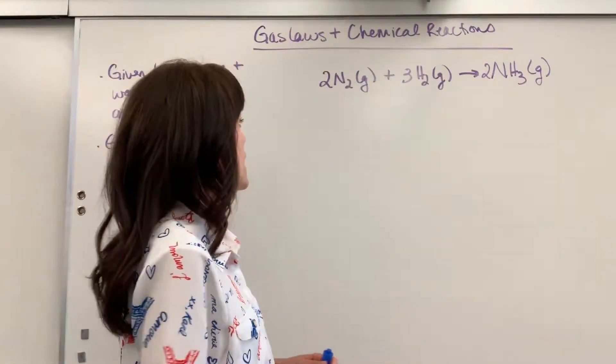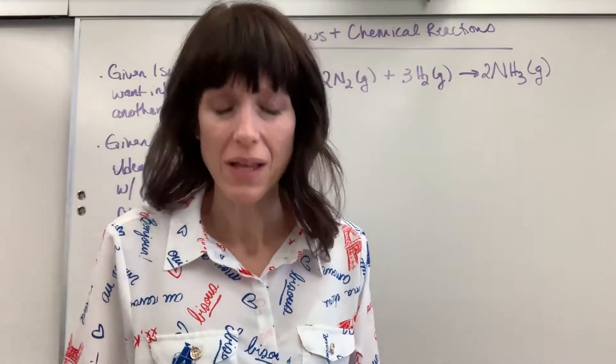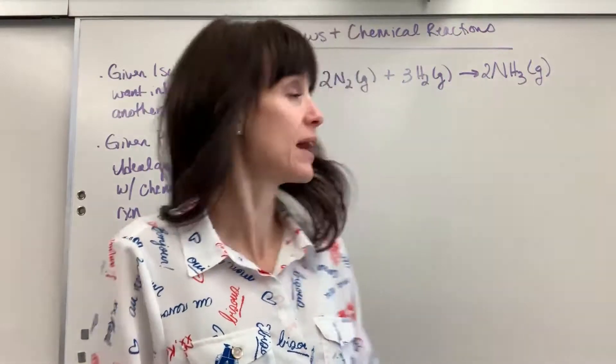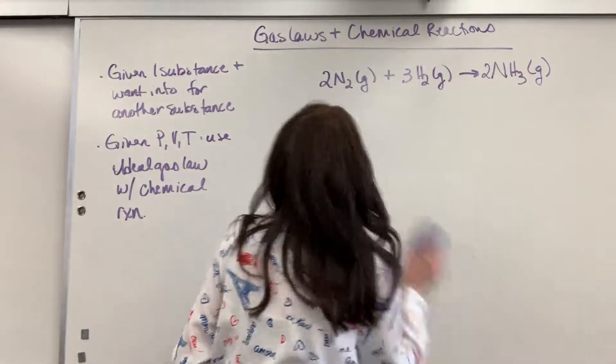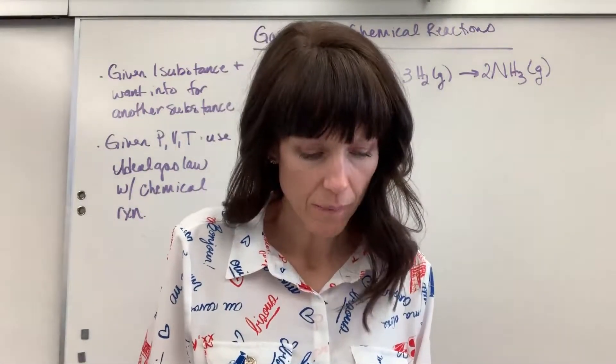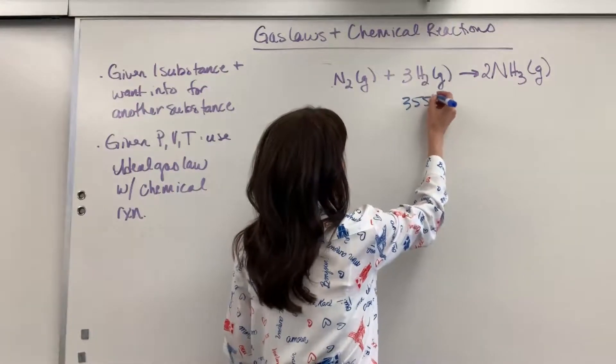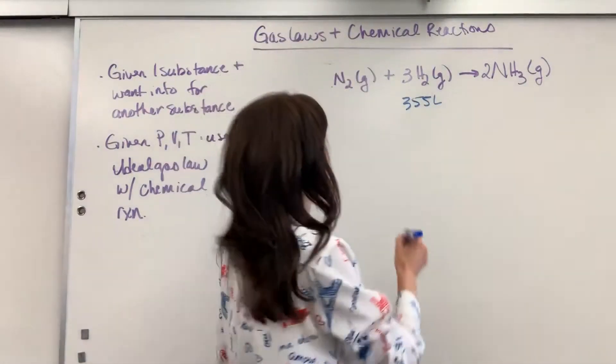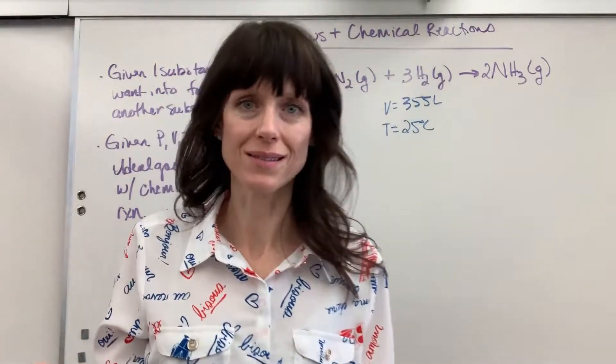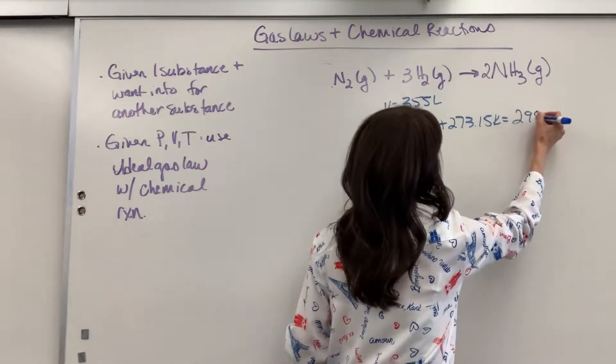Here's an example for you. We have our very classic ammonia product, the Haber process. Gaseous ammonia is synthesized by the reaction. Assume that 355 liters of hydrogen at 25 degrees C—we've got 355 liters volume, 25 degrees C temperature. When doing gas laws, we have to use Kelvin, so I'm going to add 273.15 Kelvin which gives us 298.15 Kelvin.